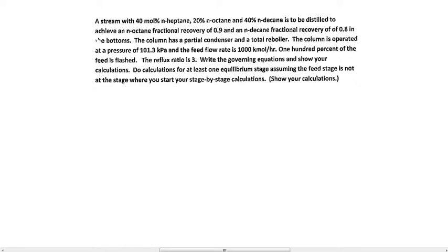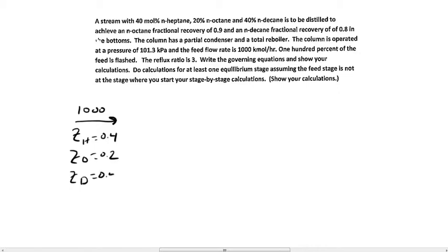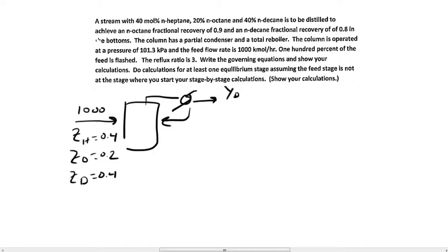I will start with the diagram. We have our feed coming in at 1,000 kmol/hr, with a mole fraction of heptane of 0.4, octane of 0.2, and decane of 0.4. We have our distillation column. Since we have a partial condenser, I'm going to write the mole fraction as y_d. And we have a total reboiler, b·x_b.